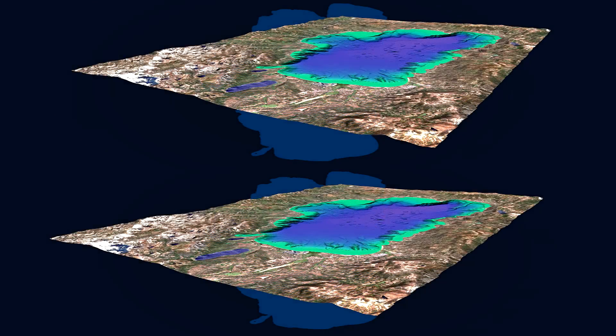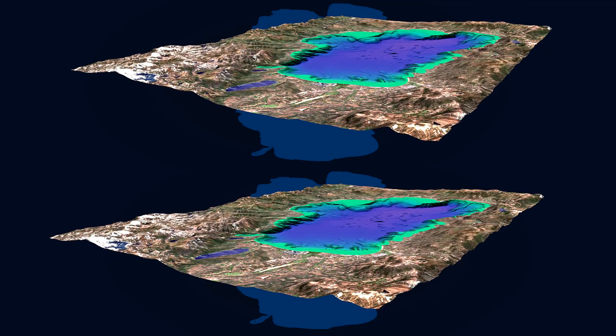The three-dimensional computer image is made from measurements of the land elevation, the lake basin depth, and satellite images. The vertical scale is exaggerated so that features can be seen more easily.